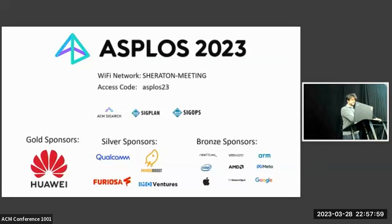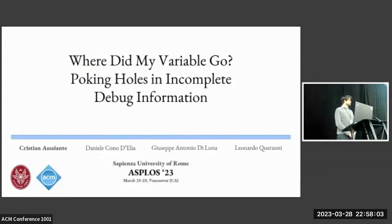Great talk, thank you. It's my pleasure to introduce the next speaker, Christian Assante, a student at the University of Rome in Sapienza, who's going to give us a talk about finding problems in debug information.